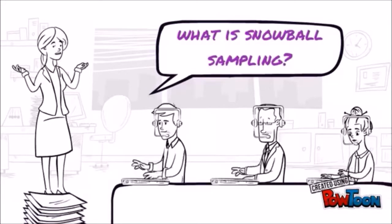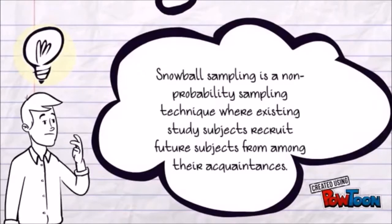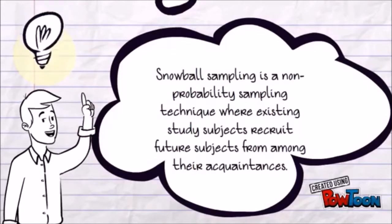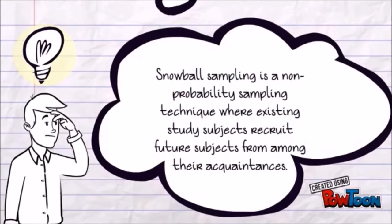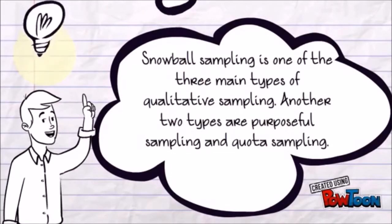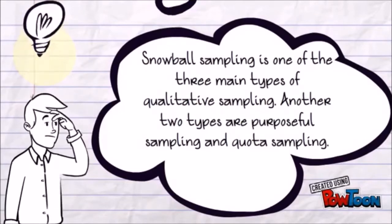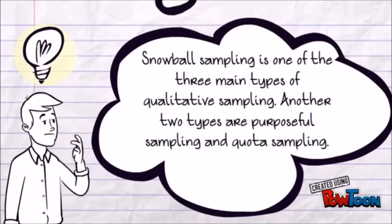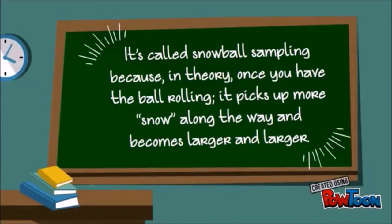What is Snowball Sampling? Snowball Sampling is a non-probability sampling technique where existing study subjects recruit future subjects from among their acquaintances. It is one of the three main types of qualitative sampling; the other two are Purposeful Sampling and Quota Sampling. It is called Snowball Sampling because, in theory, once you have the ball rolling, it picks up more snow along the way and becomes larger and larger.